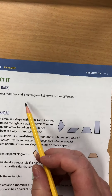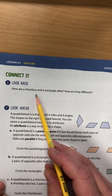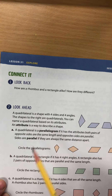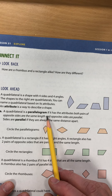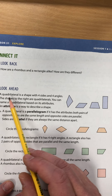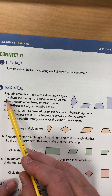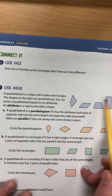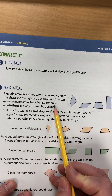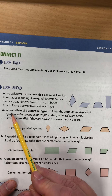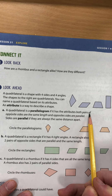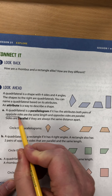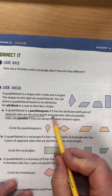On the back, this is going to give us some hints. How are the rhombus and rectangle alike? How are they different? That's exactly what we did. And now they're going to look at more attributes. An attribute is a characteristic of the shape. A quadrilateral is a shape with four sides and four angles. The shapes to the right are all quadrilaterals. You can name a quadrilateral based on its attributes — an attribute is a way to describe a shape. A quadrilateral is a parallelogram if it has both pairs of opposite sides the same length. That's one of the groups we made. Opposite sides are the same length and the opposite sides are parallel.